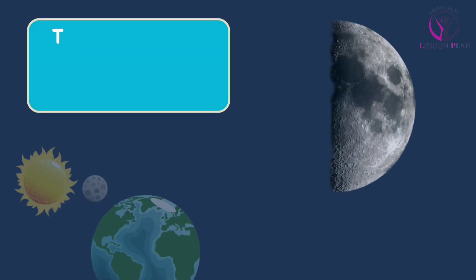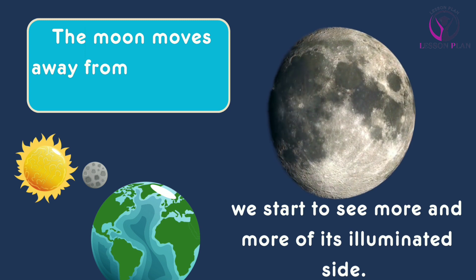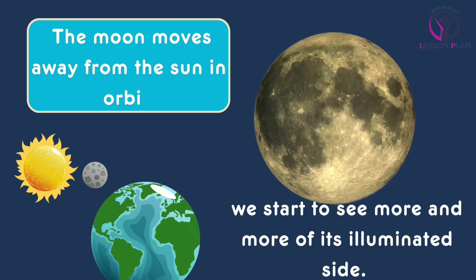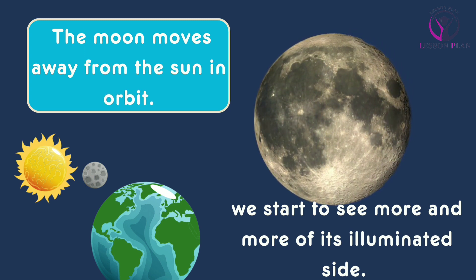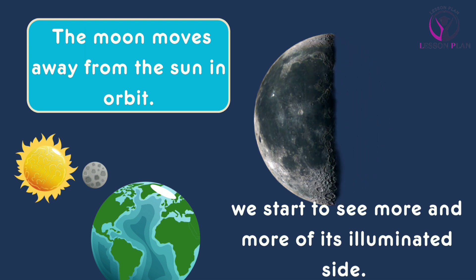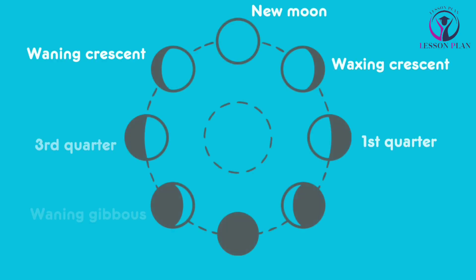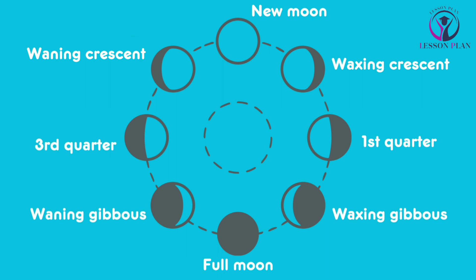This is known as the new moon phase. As the moon moves away from the sun and begins to orbit around the earth, we start to see more and more of its illuminated side. This is what causes the phases of the moon that we are familiar with: first quarter, waxing gibbous, full moon, waning gibbous, third quarter, and waning crescent.